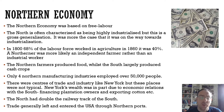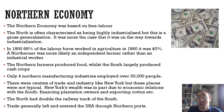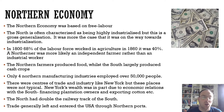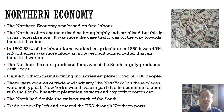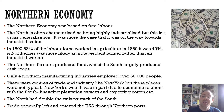New York's wealth was in part due to economic relations with the south — for example, lending money and financing some of the plantation owners, the shipping industry in New York exporting cotton to places like Britain. So it was economically different to the south, but the two economies were intertwined. The north had a lot more railway line than the south — twice as much — had a lot more people, and almost all the trade that the United States did came into or went out of northern ports.